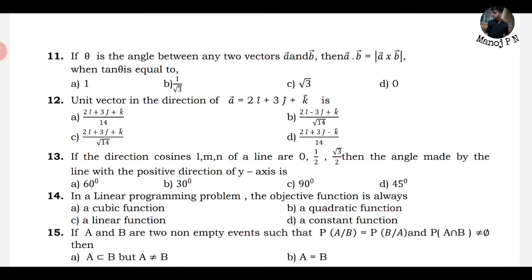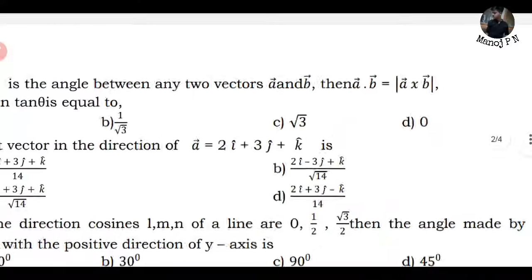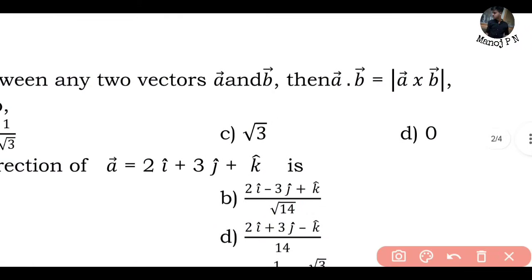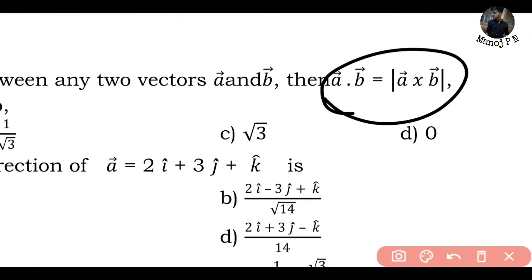Question: if theta is the angle between any two vectors A and B, and A dot B is equal to A cross B, then when tan theta is equal to what? We have the condition that A·B = A×B. You should know the formula: A·B = |A||B| cos θ and A×B = |A||B| sin θ.